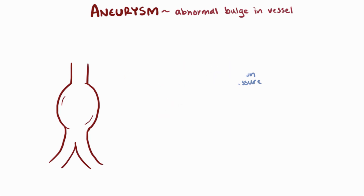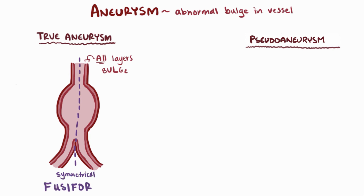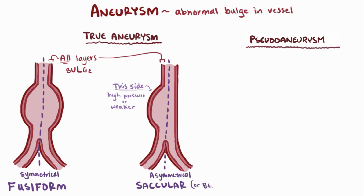There are two major categories of aneurysms: true aneurysms and pseudoaneurysms. In true aneurysms, all the layers of the blood vessel wall dilate together. True aneurysms that balloon out symmetrically on all sides are called fusiform aneurysms, whereas asymmetrically shaped aneurysms balloon out only to one side — usually because one side experienced higher blood pressures or was weaker to begin with. Asymmetrical true aneurysms can be called either saccular or berry aneurysms.